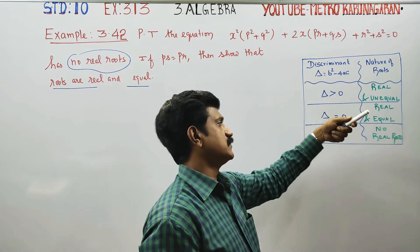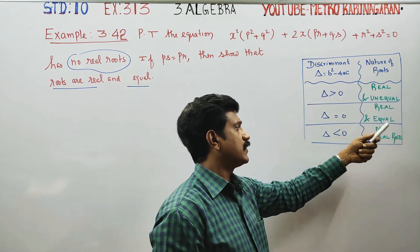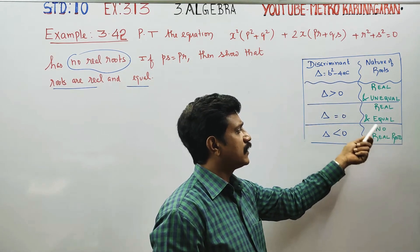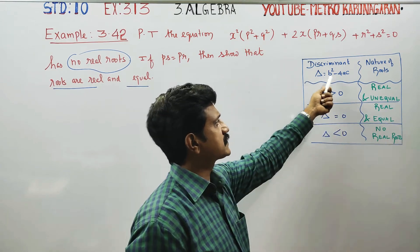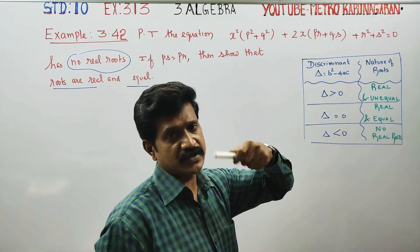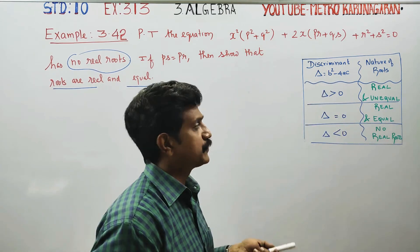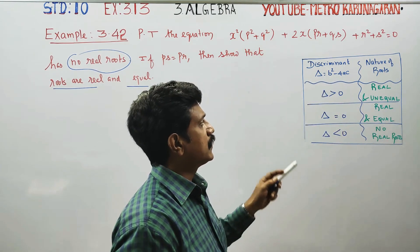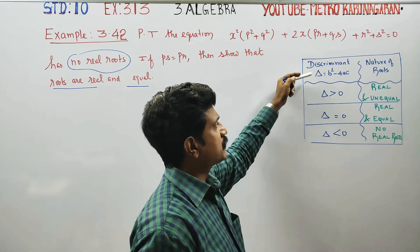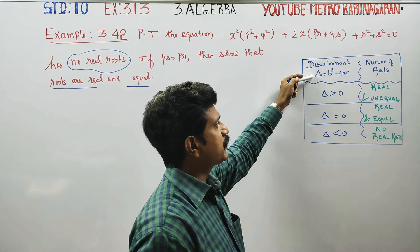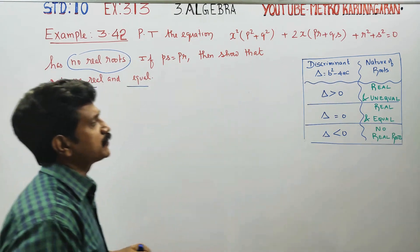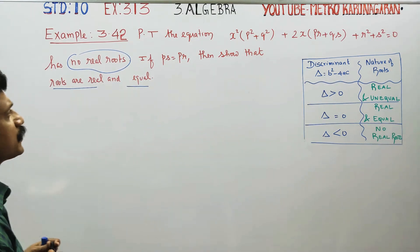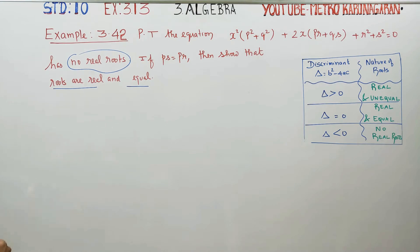Roots being real, equal, or having no real roots — to find the answer, we need the discriminant. To get the answer, we find the discriminant's intermediate value. So overall, we find the discriminant and understand its value clearly.